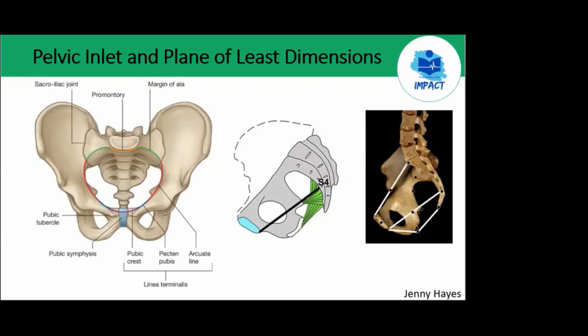The true pelvis sits between the pelvic inlet and pelvic outlet. The fetal head needs to get in through the pelvic inlet and out through the pelvic outlet. The sticking point for the fetal head is the plane of least dimensions, which is essentially the narrowest part of the pelvis. The plane of least dimensions is neither the pelvic inlet nor the pelvic outlet, but rather extends from S4 posteriorly through the ischial spine into the base of the pubic bone anteriorly. During childbirth, the fetal head rotates and flexes to present its narrowest part to the plane of least dimensions.